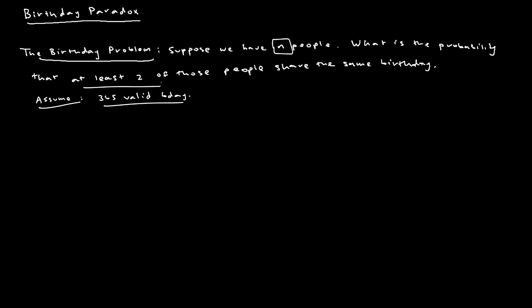When we say 'at least two sharing the same birthday,' that means either two share the same birthday, or three people, four people, all the way to all n people having the same birthday. We could calculate each of those cases, but that's a lot of cases to deal with. Anytime we see 'at least two' or that kind of terminology, an easy way to calculate the probability is through complementary counting, and that's probably the best option here.